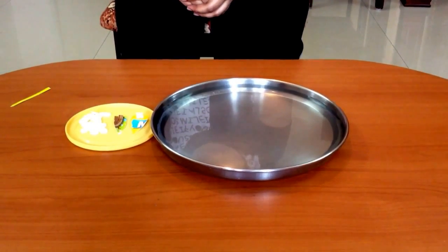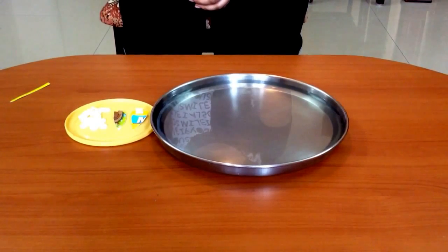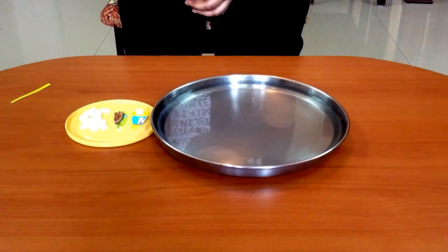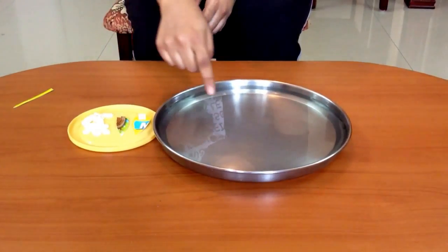In this activity we will demonstrate a camphor powered boat using surface tension of water. For this activity we need camphor, cardboard boards and water.